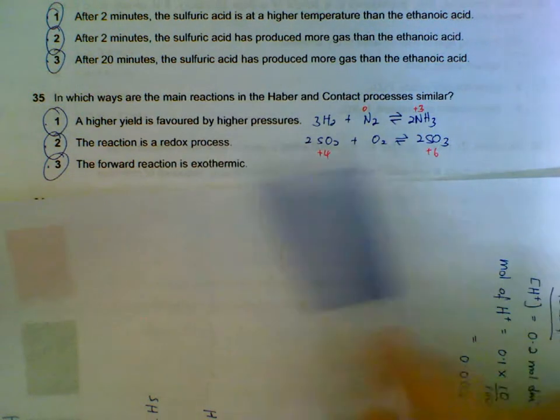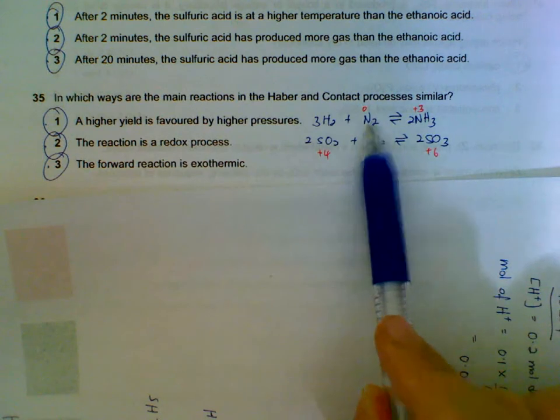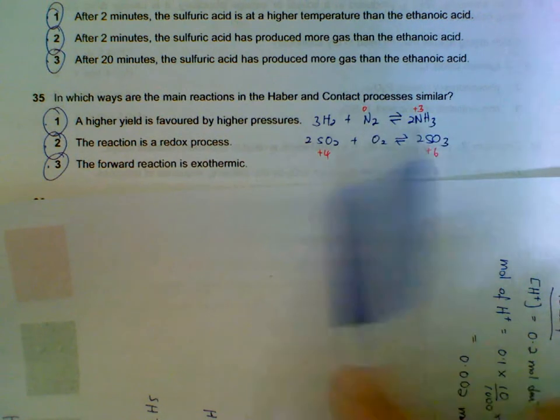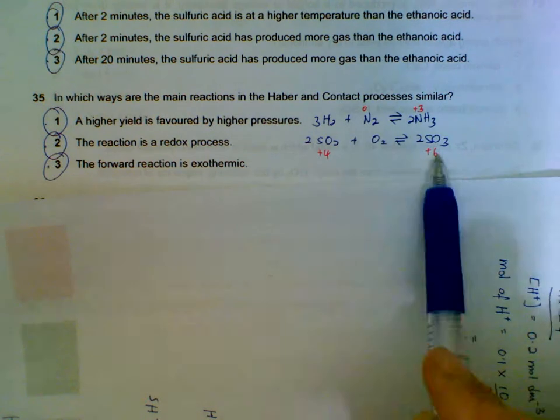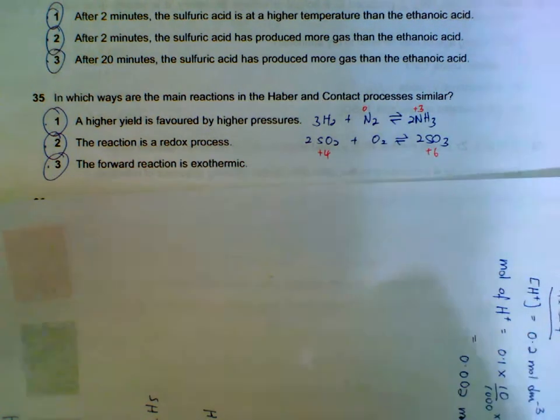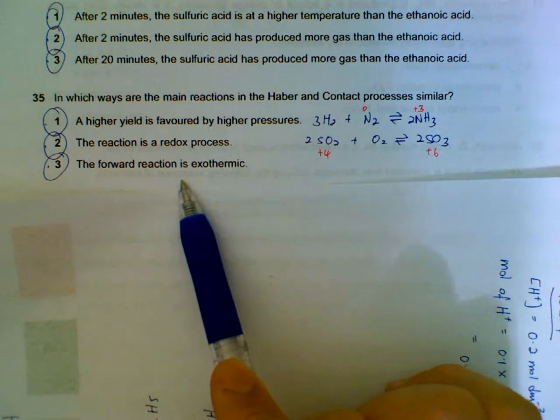The reaction is a redox process. So you can see for ammonia, if we use nitrogen to compare, nitrogen is oxidized. For contact process, sulfur is also oxidized. So reaction is a redox process for both. The last statement is what we have to remember. Both reactions are exothermic reactions.